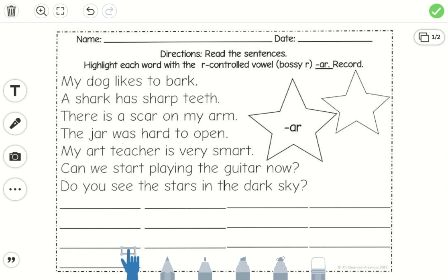Boys and girls, for this activity you are going to read the sentences. While you're reading them, you can highlight each word with the R-controlled vowel of AR. AR is what we're looking for. So the fourth one over is our highlighter and I'm just going to keep it yellow. Make sure you have a color that we can see through.